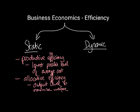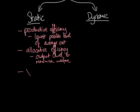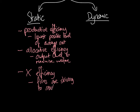The third type of static efficiency is X-efficiency. This is a concept we normally discuss in terms of inefficiency rather than efficiency. X-efficiency means that firms are striving to reach the lowest cost. It's slightly different from productive efficiency: productive efficiency is about achieving a particular level of output, whereas X-efficiency is about achieving the lowest possible level of cost given a particular level of output.